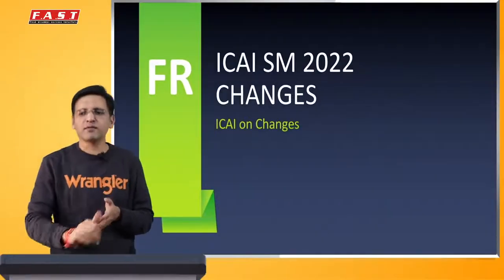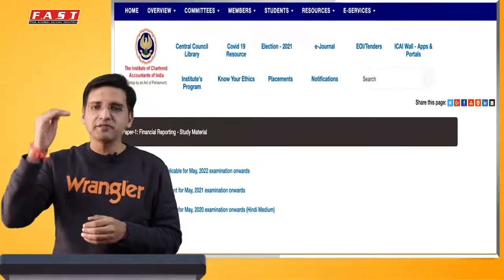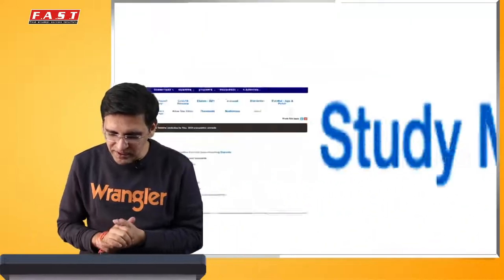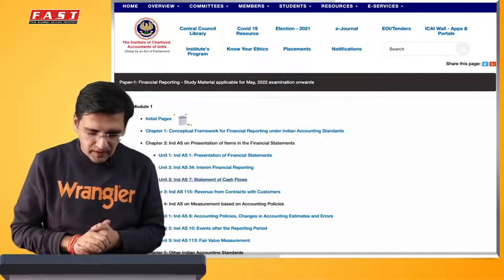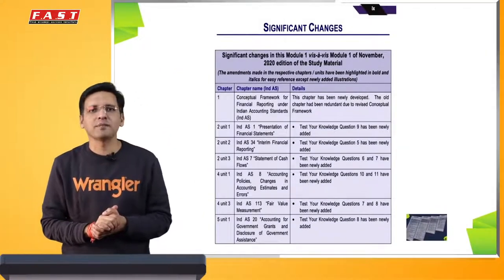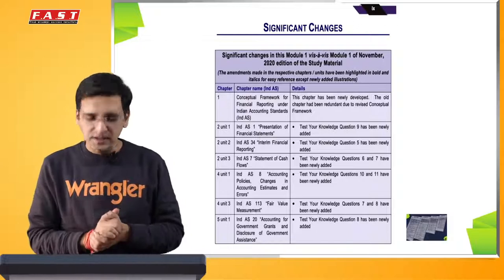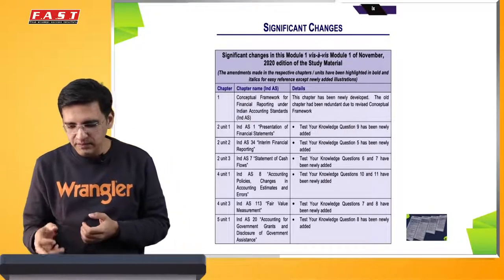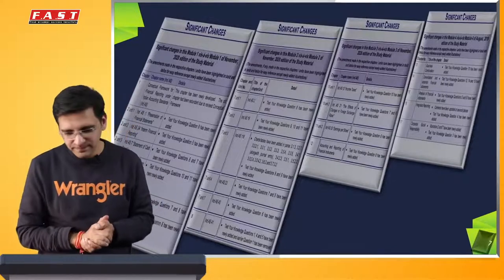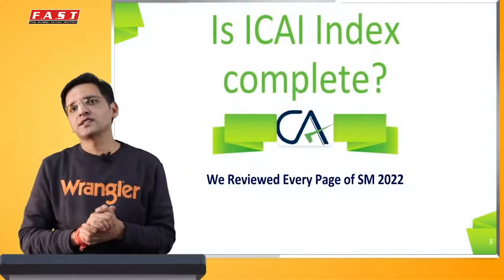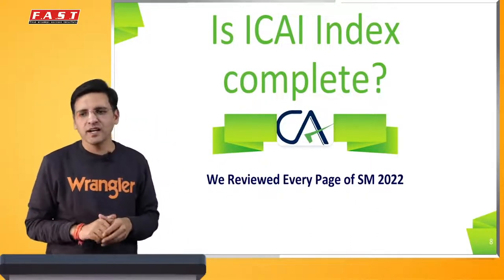Let us move first to how these particular changes have been handled by the institute. For this, we will go to the institute website and there in Financial Reporting, when you click on study material, you will find that now we have three tabs: 22, 21 and 20. Agar aap 22 ke tab pe jaate hain to you will find that there are four modules to financial reporting and every module has an initial page. In initial pages mein agar aap click karoge to aapko ek 'significant changes' ka page milega, jismein institute ne highlight kiya hai ki module 1, similarly 2, 3, 4 mein kin-kin chapters mein kya-kya tarah ke changes kiye rakhe hain. Sawal yeh uthta hai ki jo institute ne significant changes plot kiya hai, kya institute ka yeh significant changes ka index apne aap mein complete hai, reliable hai, kya purely iske basis pe changes ko track kiya ja sakta hai.